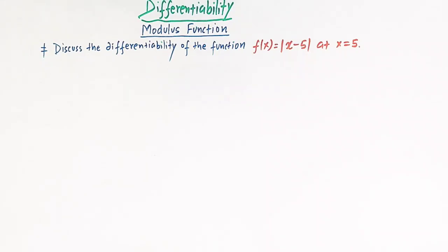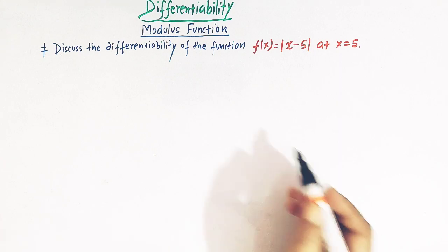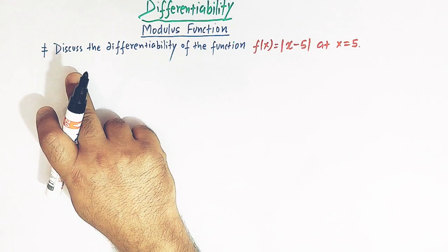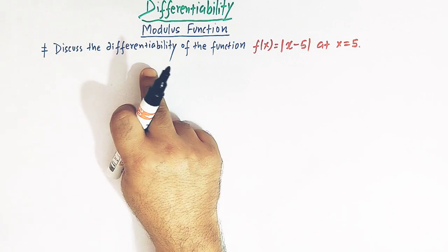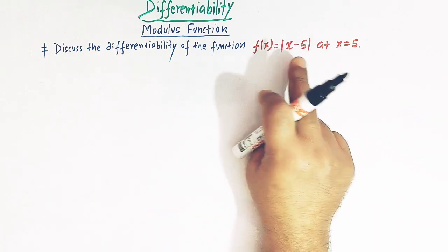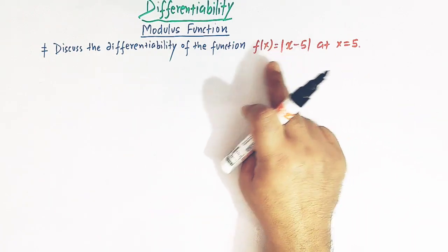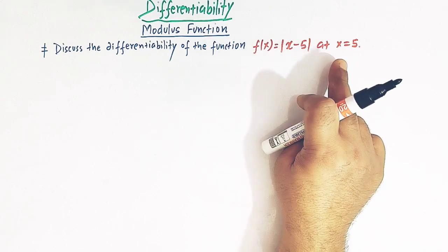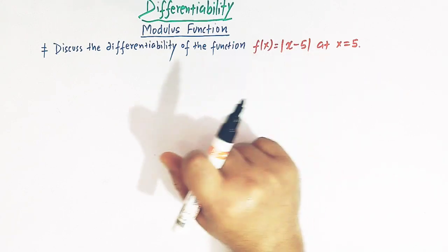Hello viewers. In today's class we are going to discuss yet another important and very conceptual problem from differentiability of functions. We have to discuss the differentiability of the mod function, that is f(x) = |x - 5| at x = 5.